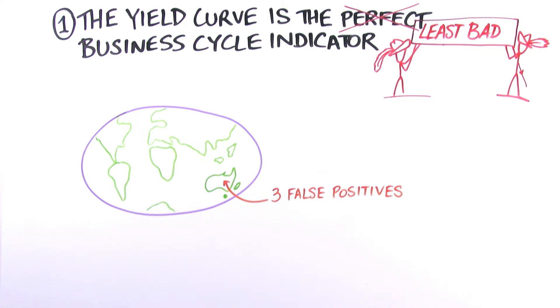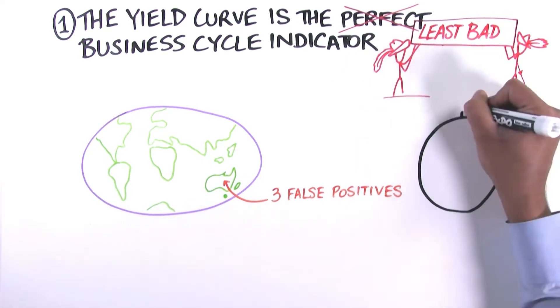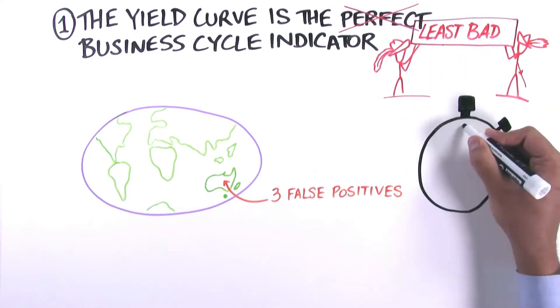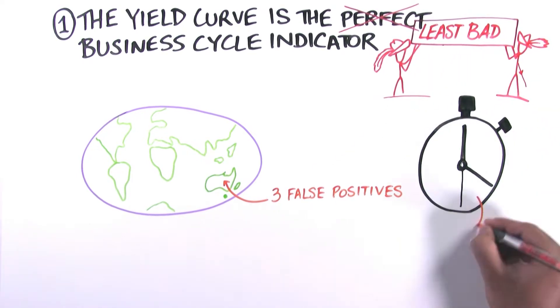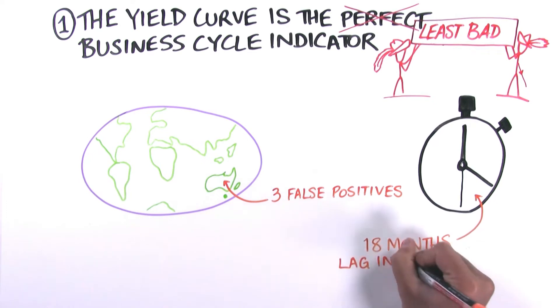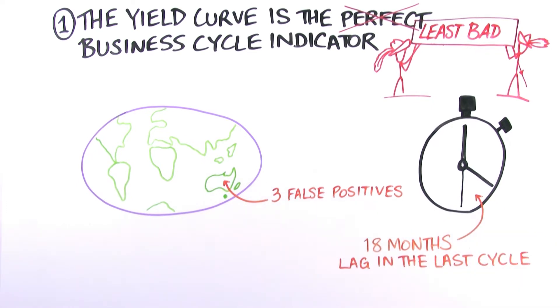Also, it's worth noting that the time between a yield curve inversion and the start of the recession is long and variable. Last cycle, it was 18 months. On average, it's been 10 to 12 months after an inversion when a recession begins.